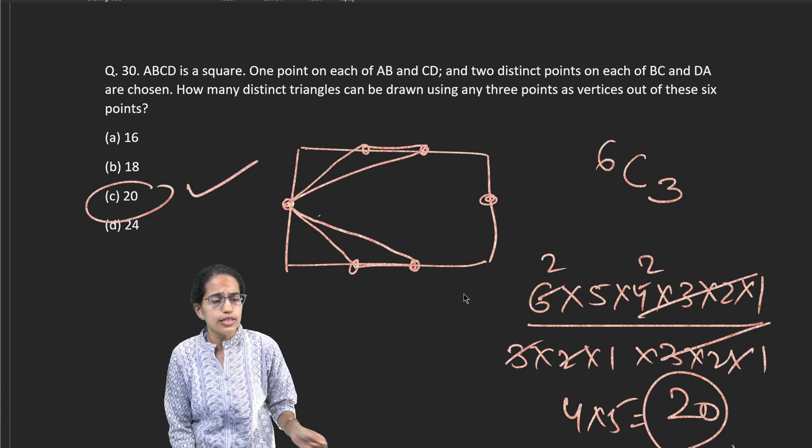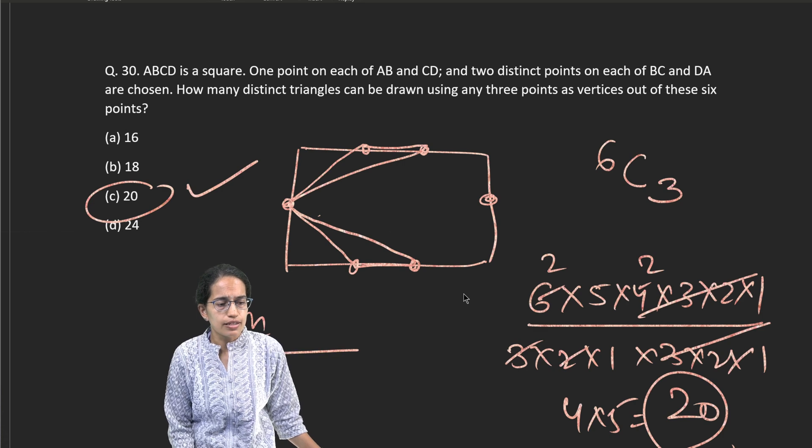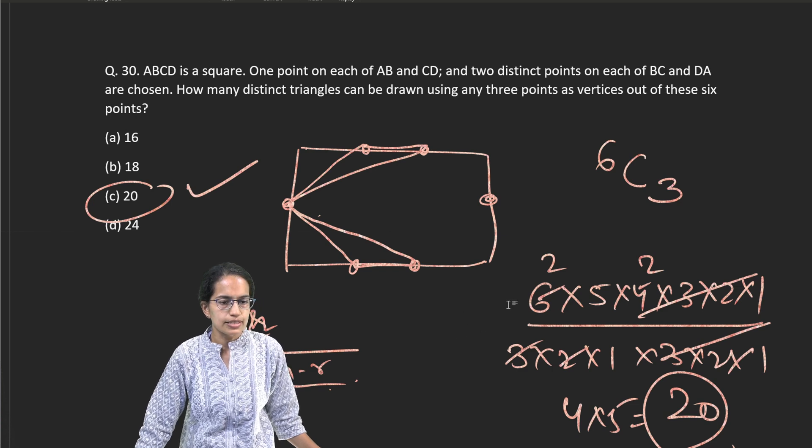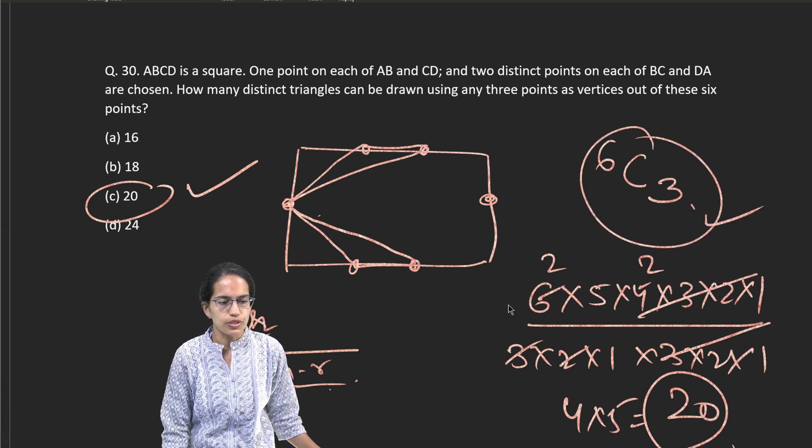Now, to solve this, I can have nCr equals n factorial divided by r factorial times n minus r factorial. That's how you can divide it. And that's how you solve this factorial problem.